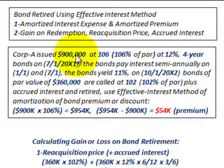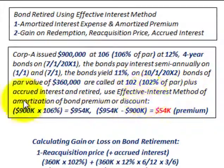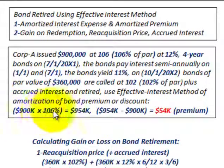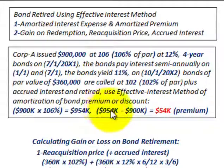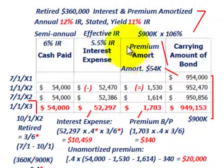So of the $900,000 that were initially issued, $360,000 worth are going to be retired. They were initially issued on 7-1-20X1, and the $360,000 are going to be retired on 10-1-20X2. We're going to use the effective interest method for the amortization of the bond premium. The bonds were issued at $954,000 — that's $900,000 at 106% — giving us a $54,000 premium.